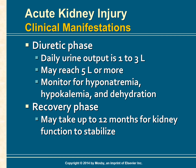During the diuretic phase of AKI, daily urine output usually is approximately one to three liters but may reach five liters or more. The high urine volume is caused by osmotic diuresis from the high urea concentration in the glomerular filtrate and the inability of the tubules to concentrate the urine. Because of large losses of fluid and electrolytes, the patient must be monitored for hyponatremia, hypokalemia, and dehydration. The diuretic phase may last one to three weeks, and near the end, BUN, creatinine, and acid-base values begin to normalize.